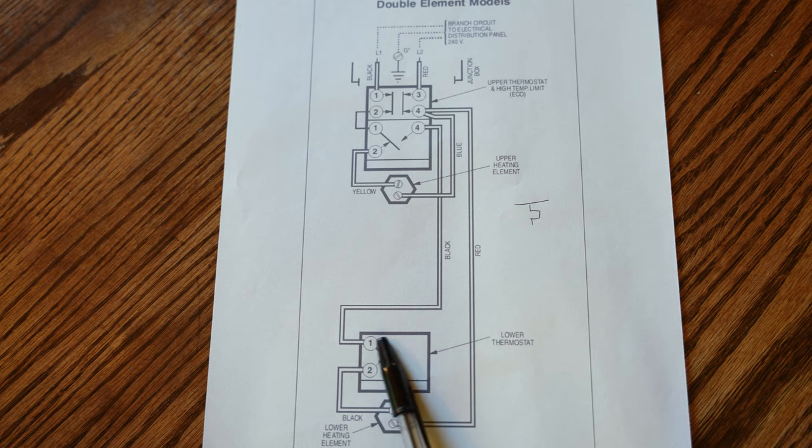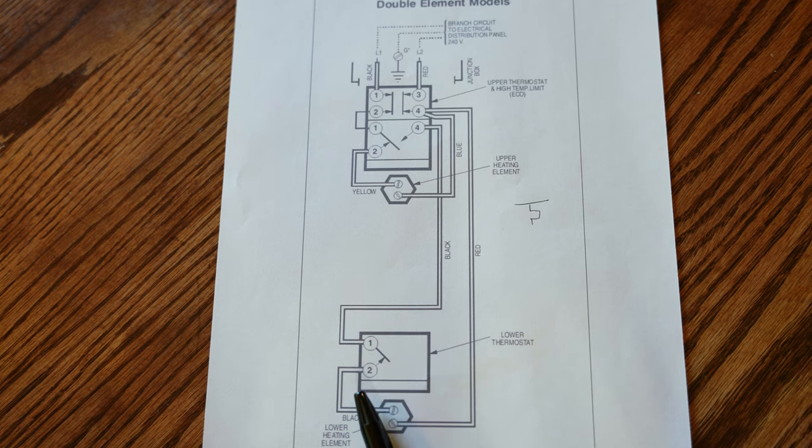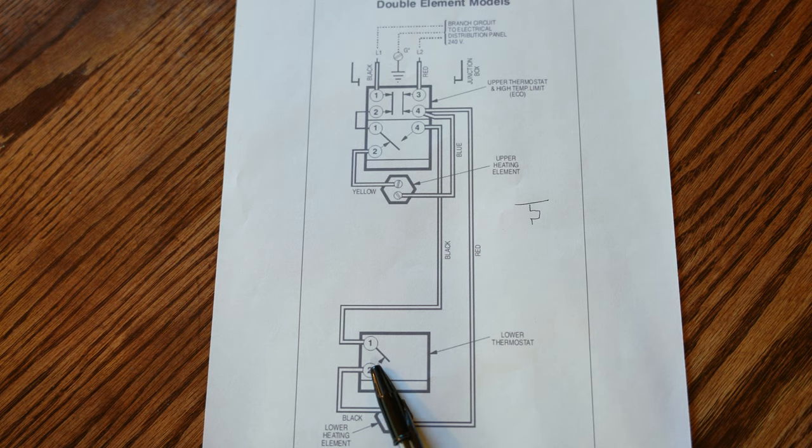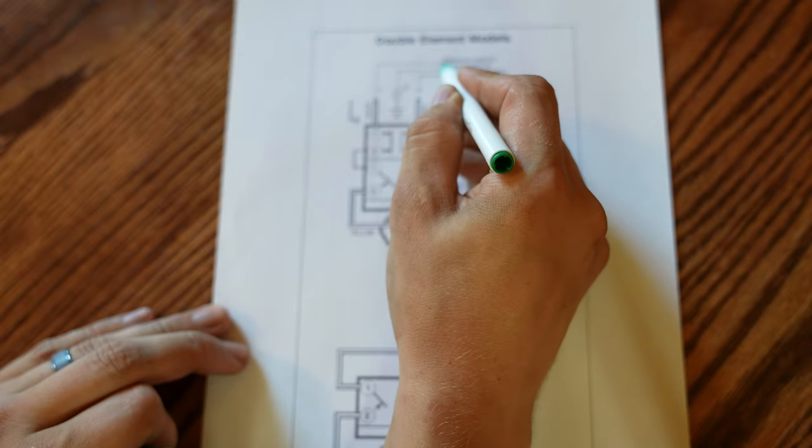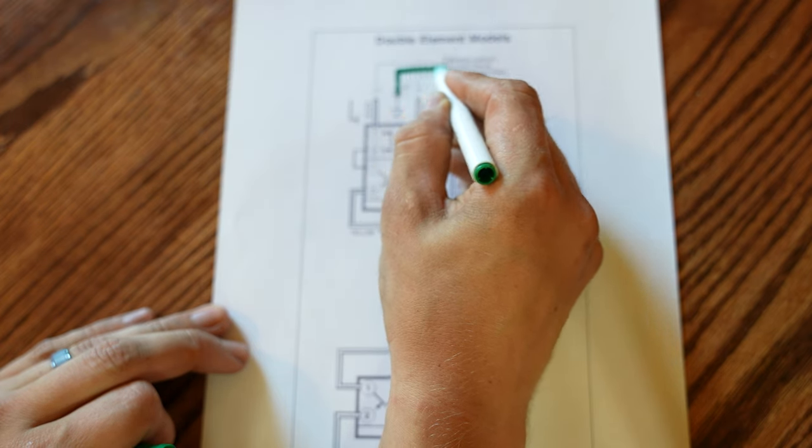As for the lower thermostat, it's a lot more simple. Whenever the temperature on the lower section of the water heater gets colder, this switch will go down and touch number two. As the water gets heated up by the heating element, this switch will go back up and interrupt power to turn off that heating element. So let's try tracing this quick and see how the power goes. It's actually really simple.